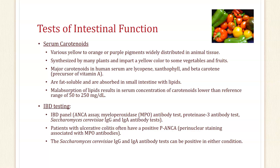Serum carotenoids are yellow-to-orange and purple pigments widely distributed in animal tissues, fruits, and vegetables — think bell peppers, carrots, and sweet potatoes. The major carotenoids in human serum are lycopene, xanthophyll, and beta-carotene. Beta-carotene is the precursor to vitamin A (retinol). Carotenoids are fat-soluble and absorbed in the small intestine with lipids. Malabsorption of lipids results in serum carotenoid concentrations lower than the reference range of 52 to 150 mg/dL.